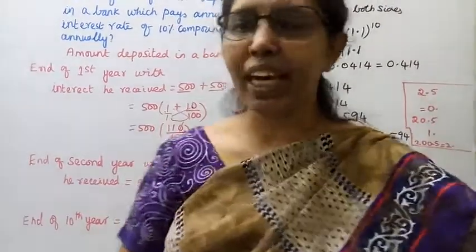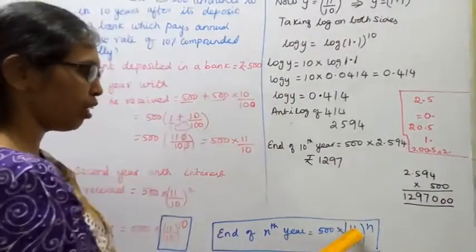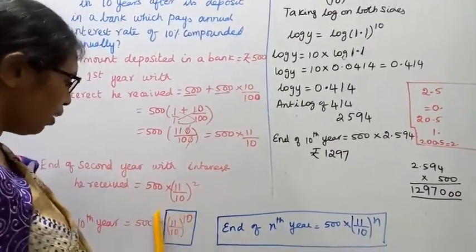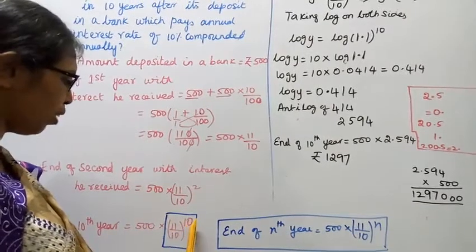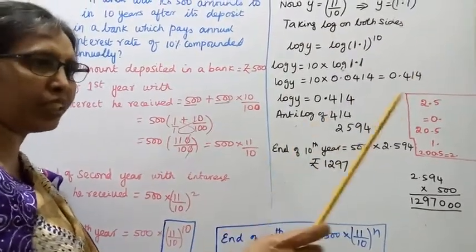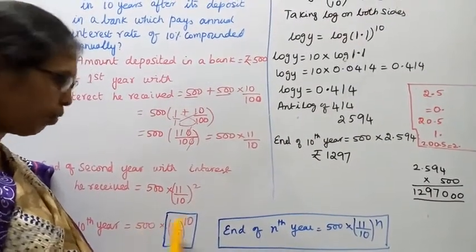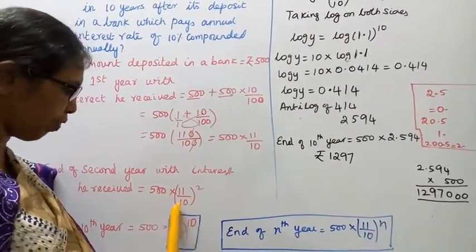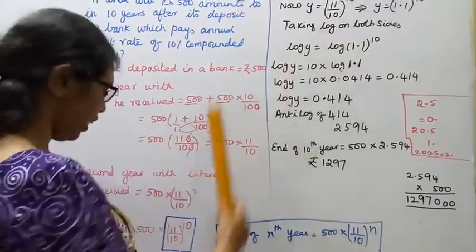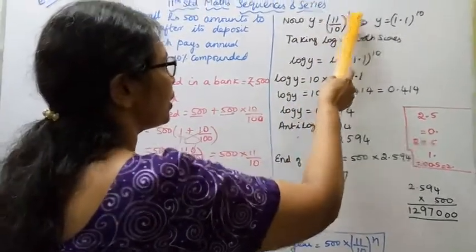Suppose at the end of n years, the amount will be 500 into (11/10) to the whole power n. You can also write this as 500 into (1.1) to the power n. That is the general formula for the deposit amount. Now for our problem, we substitute n equal to 10, giving 500 into (1.1) to the power 10.